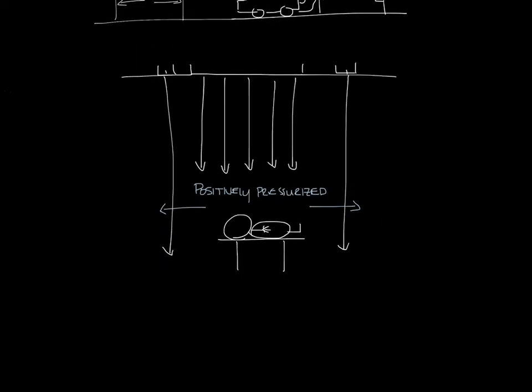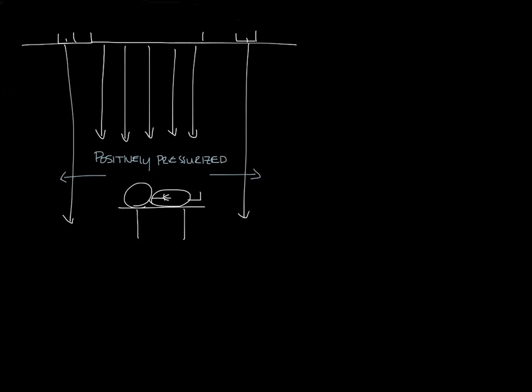You also want the operating room to be kept positive relative to adjacent areas. Put the floor down here. And let's say there's a door over here somewhere. So you want the operating room side to be positive, the outside hall to be negative, so that the airflow wants to move from the positive side in the operating room out into the hall.